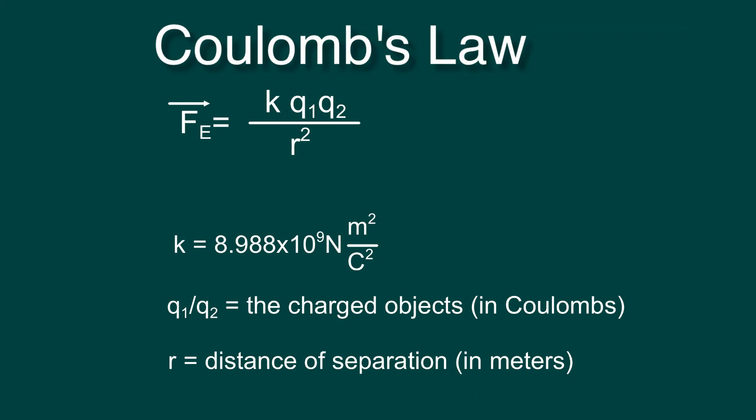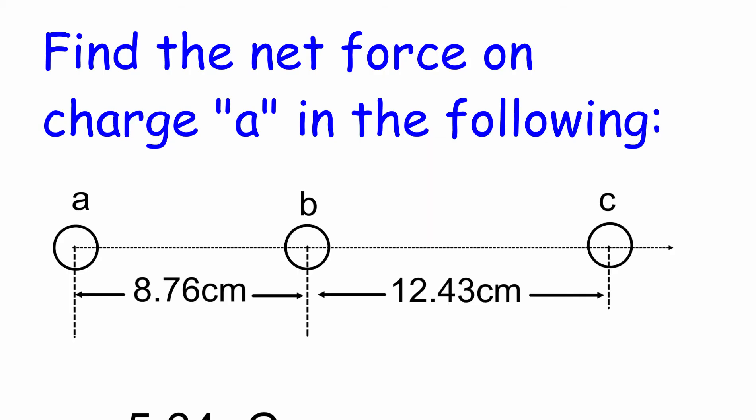Coulomb's law is KQ1Q2 divided by R squared. K is Coulomb's constant, which is 8.988 times 10 to the 9th newtons meter squared per Coulomb squared. Q1 and Q2 are the charged objects that are interacting, measured in Coulombs, and R is the distance of separation between those two objects measured in meters. For this video, we're going to be looking at net forces with electrostatics and Coulomb's law in one dimension.